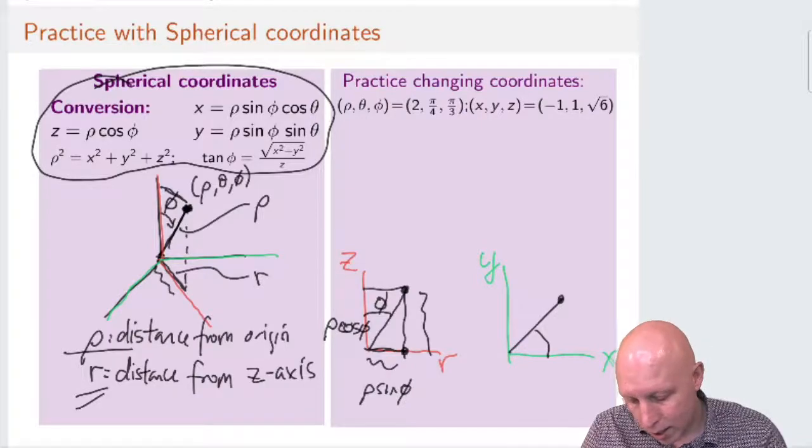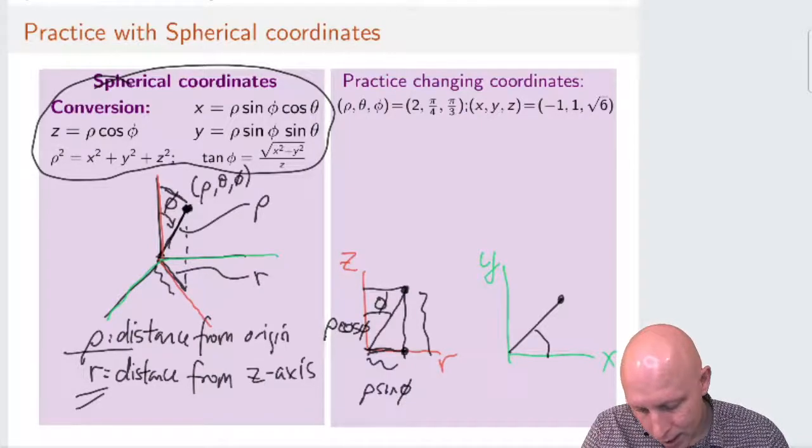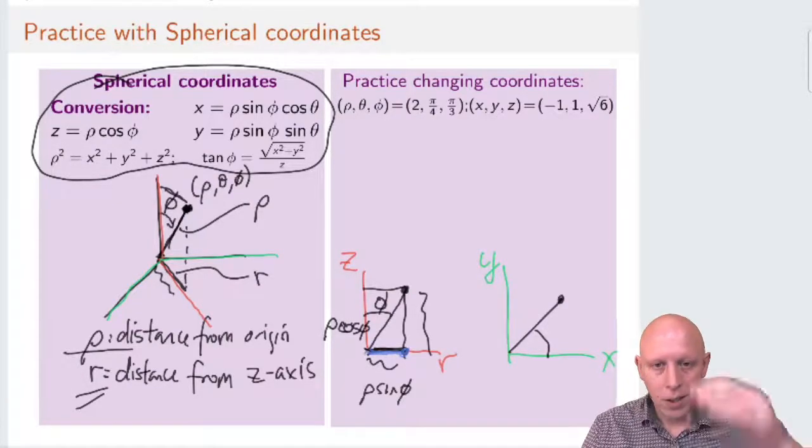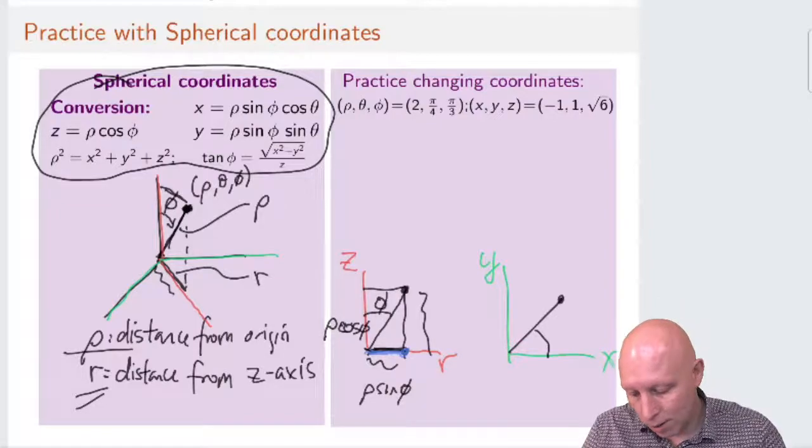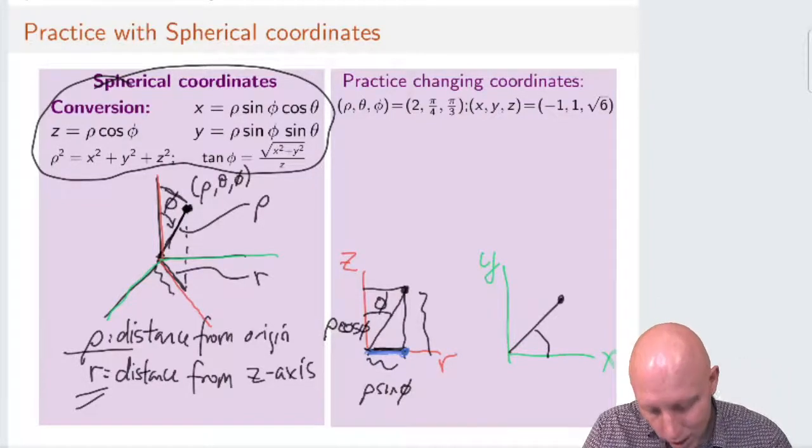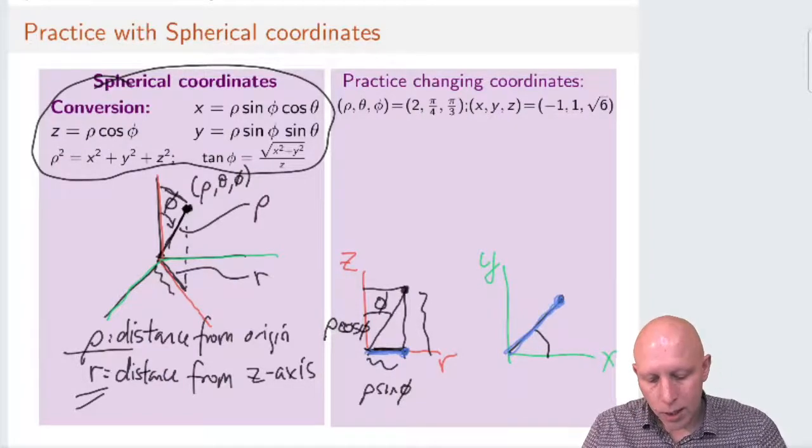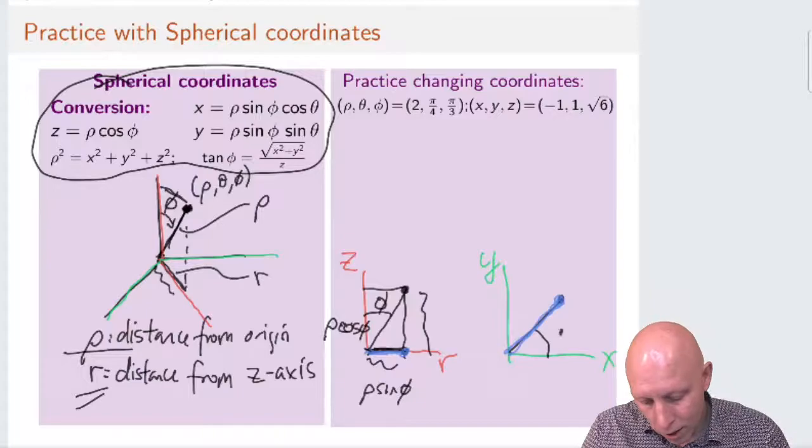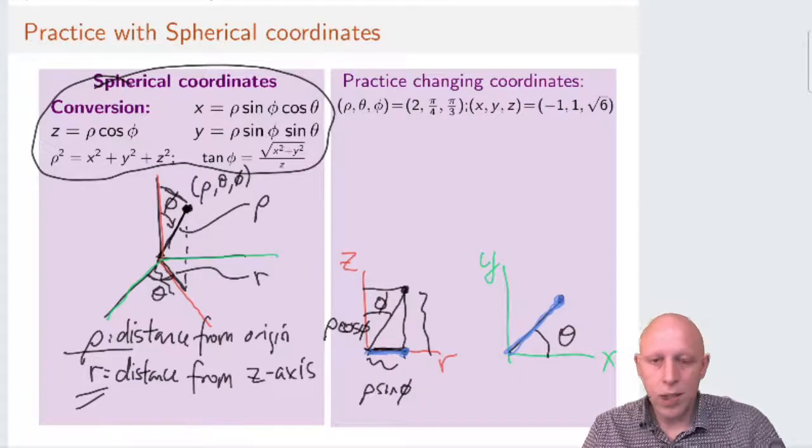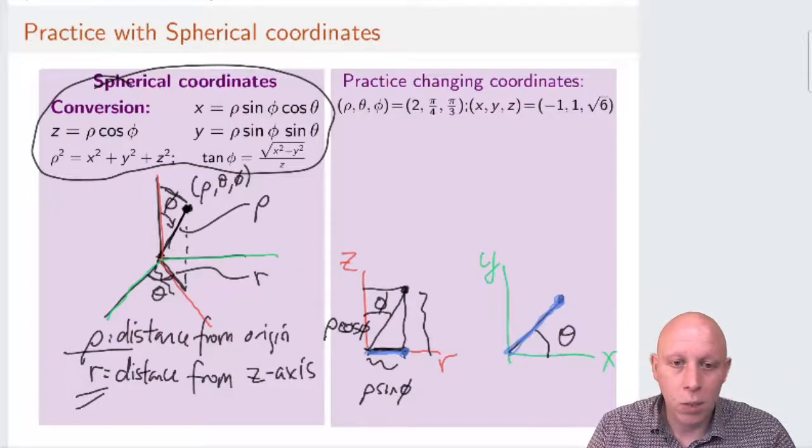And so if we now take this part, this part of the projection of our segment that goes from the origin to our point, and we draw it in the xy plane, then that's where we see where our angle theta is. This angle theta is the angle that this segment makes with positive x-axis.